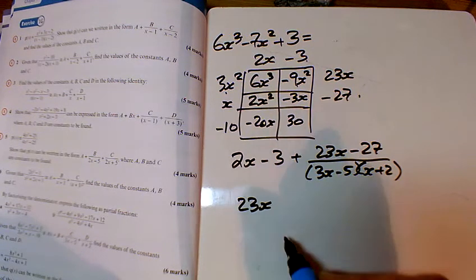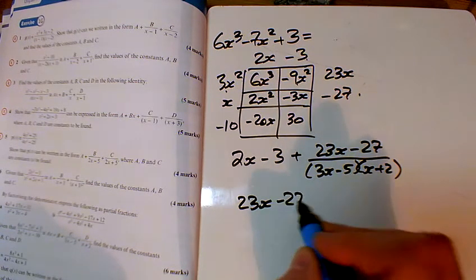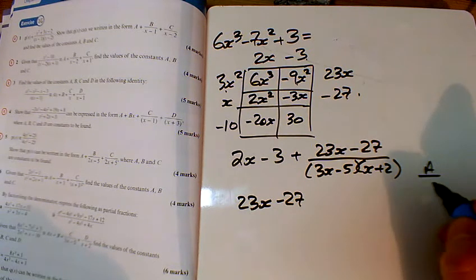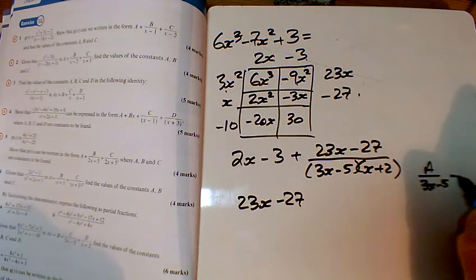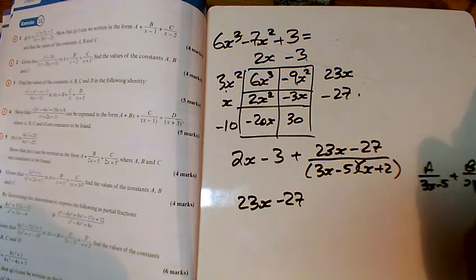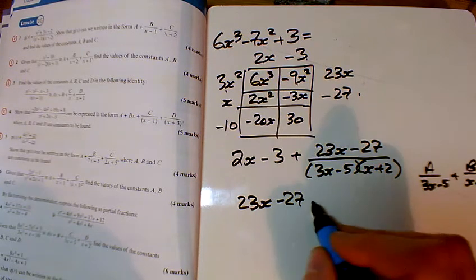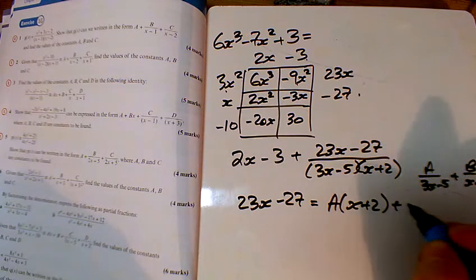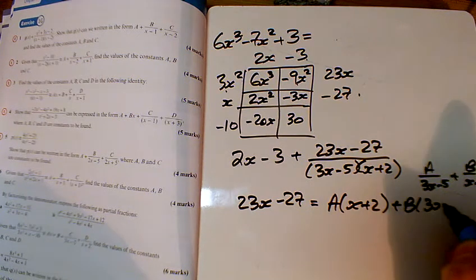So 23x - 27 equals A/(3x - 5) + B/(x + 2). We've got A times (x + 2) plus B times (3x - 5).